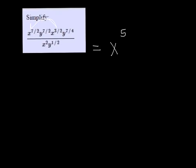And then 7 halves plus 7 fourths is 21 fourths. So we get y to the 21 over 4. So already the top looks a lot better.